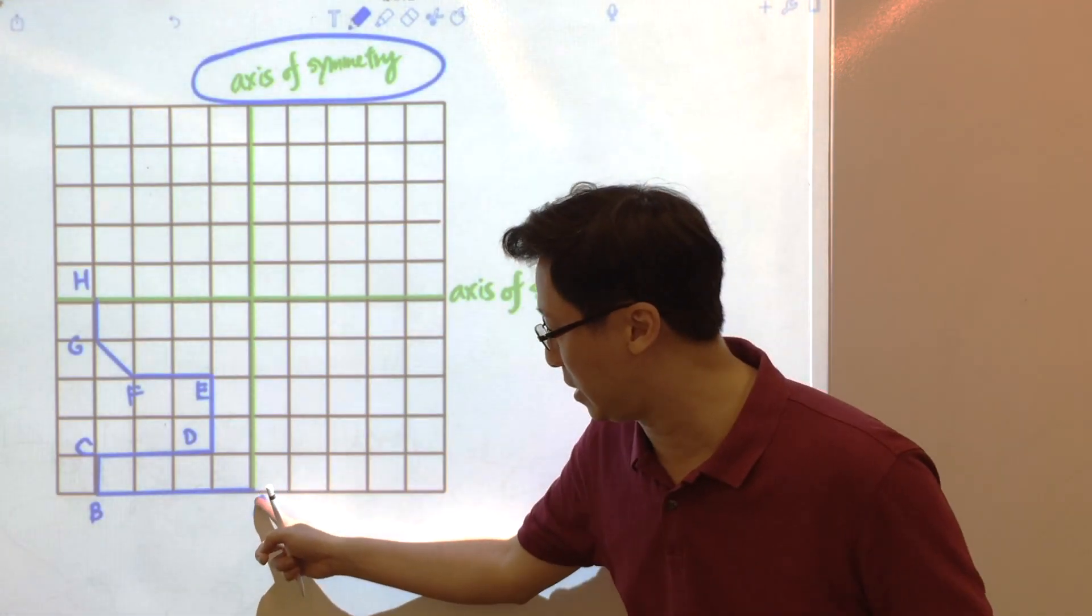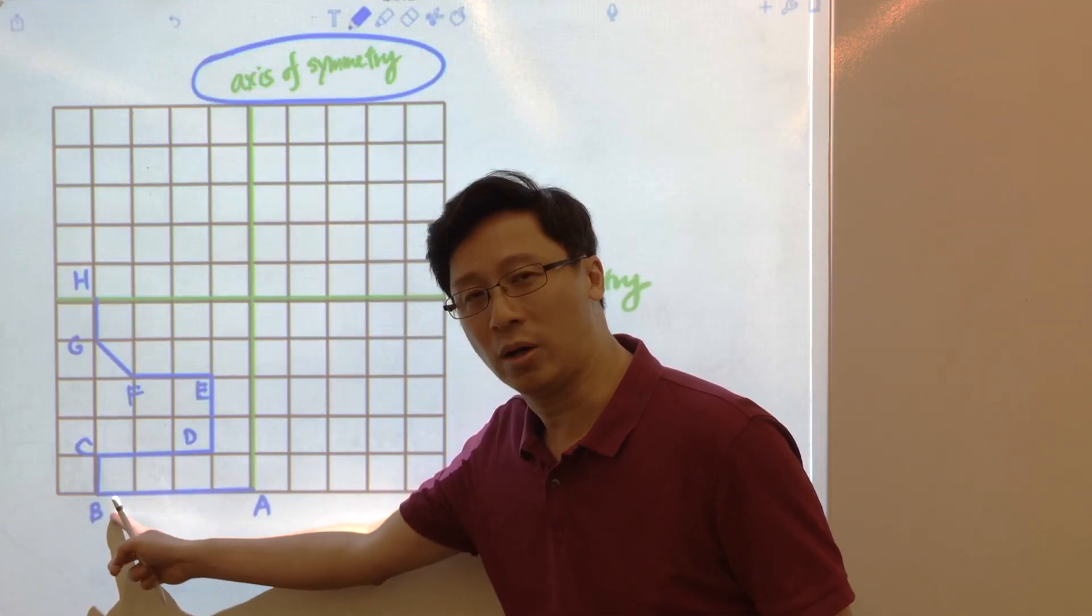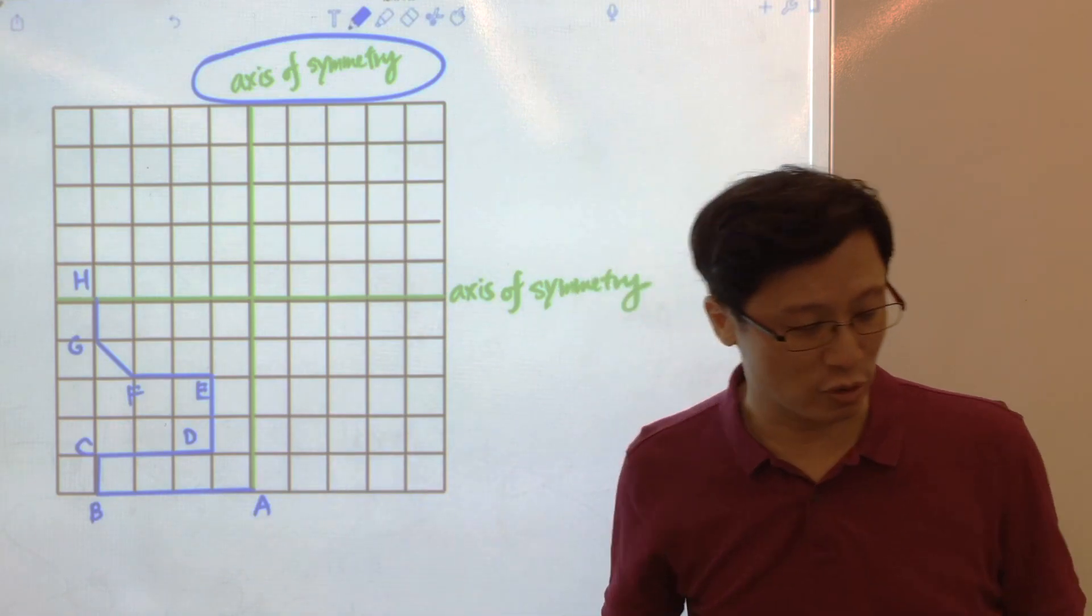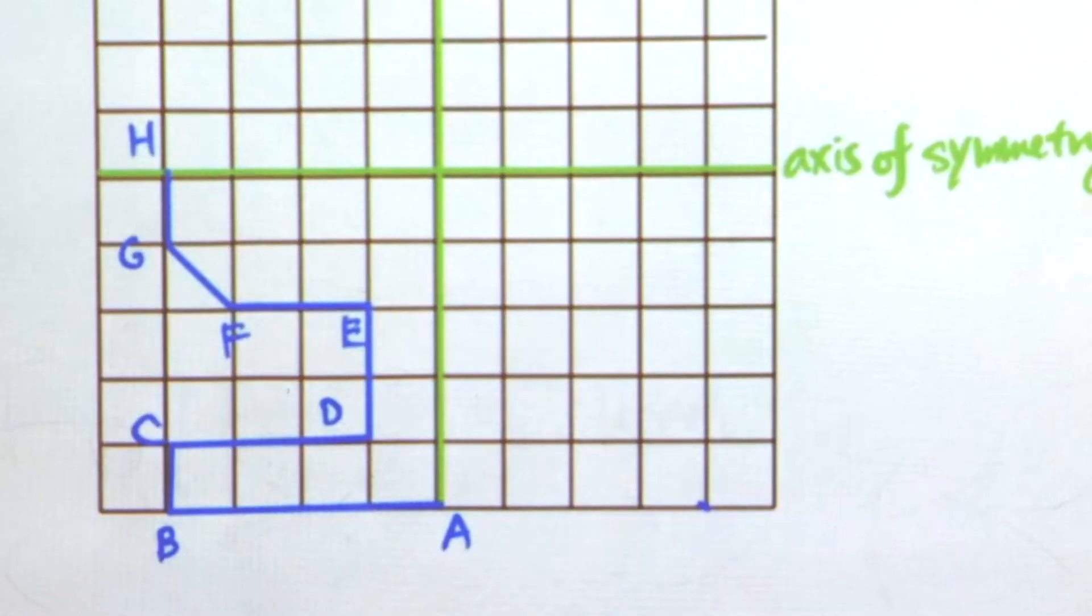So point A is here. So B will be 4 squares on the left-hand side of this mirror. And therefore this image will be, again, 4 squares towards the right-hand side on the other side.